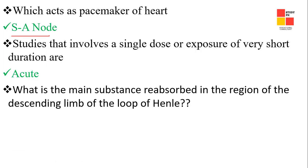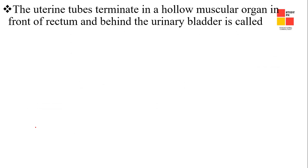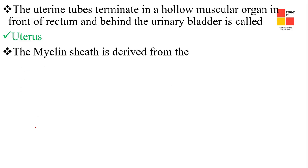Next one: what is the main substrate reabsorbed in the region of the descending limb of the loop of Henle? The right answer is water. Next one: the uterine tube terminates in a hollow muscular region in front of the abdomen, behind the urinary bladder, which is called the uterus.